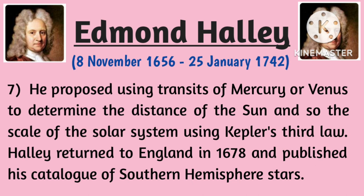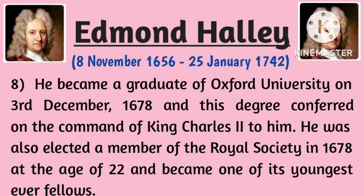Halley returned to England in 1678 and published his catalogue of southern hemisphere stars. He became a graduate of Oxford University on 3rd December 1678, a degree conferred on the command of King Charles II. He was also elected a member of the Royal Society in 1678 at the age of 22, becoming one of its youngest ever fellows.